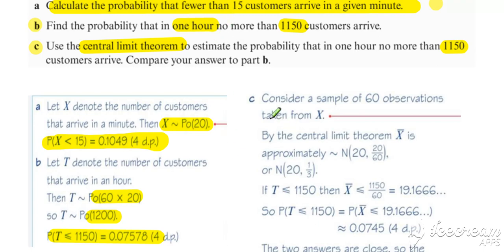And we just need to look at it in a slightly different way so we can attack it using the central limit theorem idea. So what we do is consider a sample of 60 observations taken from X. So one observation in the first minute, one observation in the second minute, etc. So 60 separate observations taken from X.